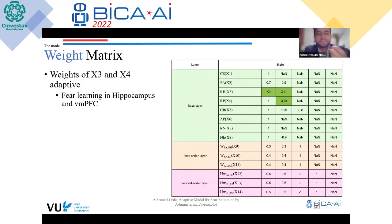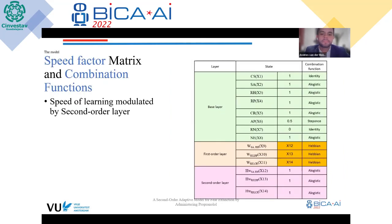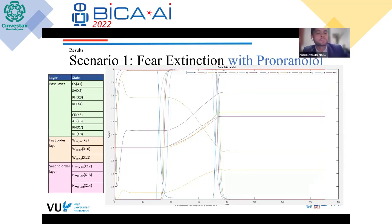The weight matrix, which influences the learning of the hippocampus and the prefrontal cortex, is affected by the first-order layer. The first-order layer uses Hebbian learning.